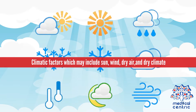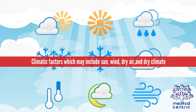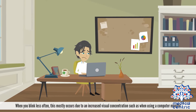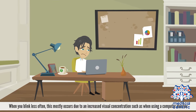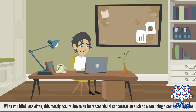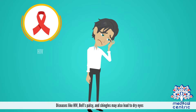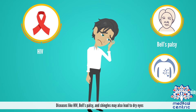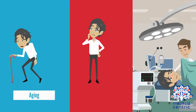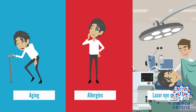Climatic factors, which may include sun, wind, dry air, and dry climate. When you blink less often — this mostly occurs due to increased visual concentration, such as when using a computer monitor, reading, or driving a vehicle. Diseases like HIV, Bell's palsy, and shingles may also lead to dry eyes. Aging, allergies, and laser eye surgery are also risk factors.